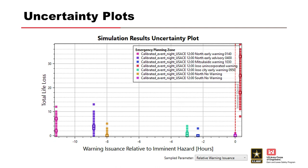What if you don't include any uncertainty at all, or very little uncertainty? In this example, with no uncertainty about the warning issuance time for any of the planning zones, it becomes very difficult to see the range of possibilities and determine if the issuance time is significantly impacting life loss.